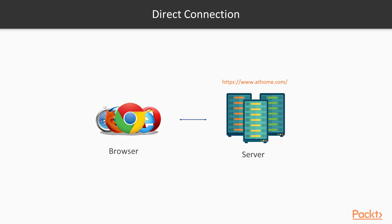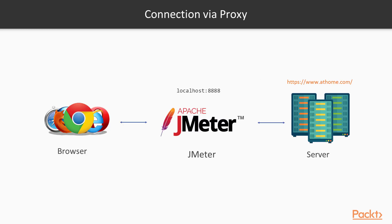The user clicks on some element on the page and the browser communicates with the server directly. If you change the proxy settings of your operating system, or if the browser has its own proxy settings, applications start sending requests to servers via a proxy server. In our case, we will start JMeter in proxy server mode, and we need to configure the browser to send requests via it.